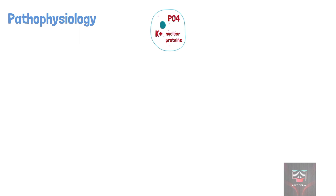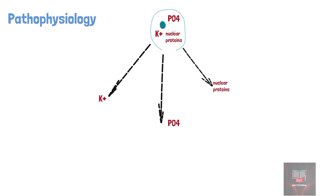Normally, there are higher concentrations of potassium, phosphate, and proteins inside the cell. Thus, lysis of the cell results in the release of these intracellular ions and proteins. Hyperkalemia is often the earliest laboratory manifestation. Lysis of the tumor cells also leads to release of intracellular phosphate, leading to hyperphosphatemia.